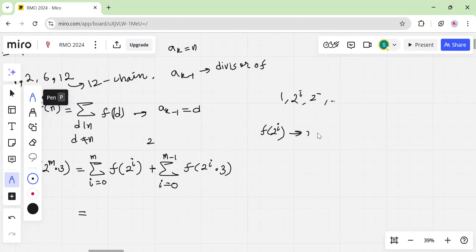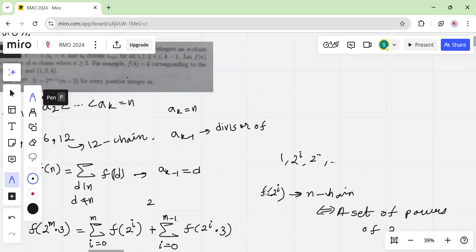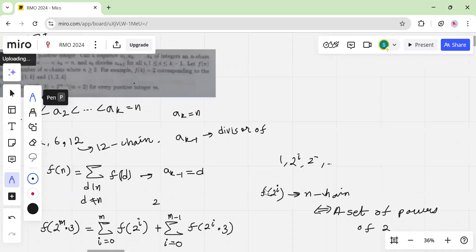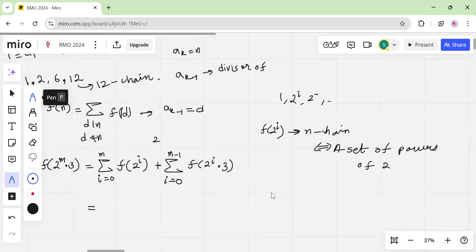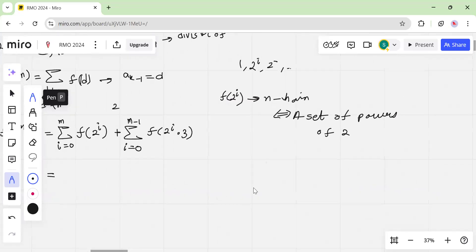So basically, every such n-chain corresponds to a subset of powers of 2, that's all it is. Like the set of powers of 2 which are there in the n-chain, and then the way to arrange it is of course clear, and all of that is fine. So let's see, what can the set of powers of 2 be? 1 is there, 2 to the m is there for sure, but everything else you can determine clearly.